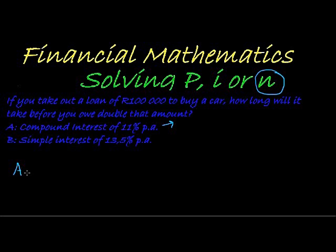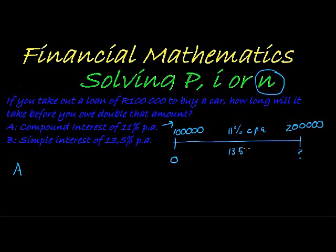First of all, we are working with compound interest. Let's start with a timeline. Time 0, we have 100,000 that we loaned from the bank. And at this time, we don't know what the time is here. We are owing 200,000 to the bank. And our interest here is either 11% compound per annum or 13.5% simple interest per annum.